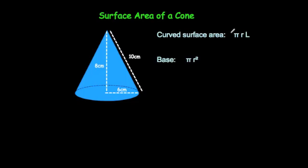First of all, let's work out the curved surface area. That's pi times the radius which is 6, times the slant height (the diagonal length here) which is 10. That's going to be pi times 60. On your calculator, do shift pi times 60 equals 188.4955592.